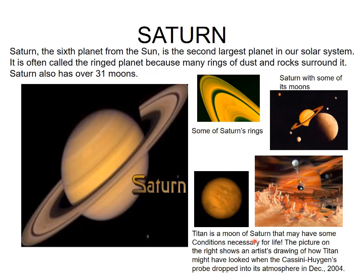Titan is the greatest moon of Saturn and may have some conditions necessary for life. The picture on the right shows an artist's drawing of how Titan might have looked when the Cassini probe dropped into its atmosphere in December 2004. Scientists are trying to discover if there is any trace of living entities on this satellite of Saturn.